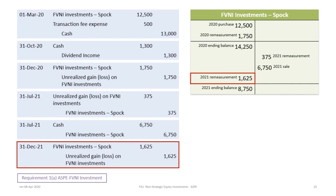At the end of the fiscal year we have another remeasurement. The remaining 2,500 shares are multiplied by the new $3.50 fair value minus the $2.85 carrying value from the previous period. That's $0.65 times 2,500, which is $1,625. We debit FVNI Investments — Spock and credit Unrealized Gain on FVNI Investments. This gives a T-account balance of $8,750, equal to 2,500 shares times $3.50.